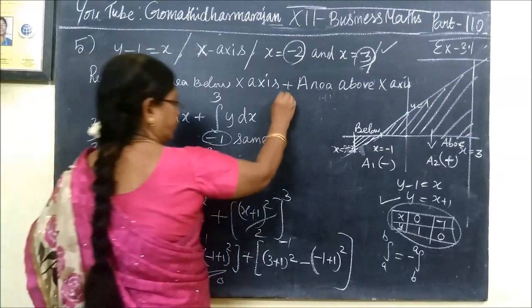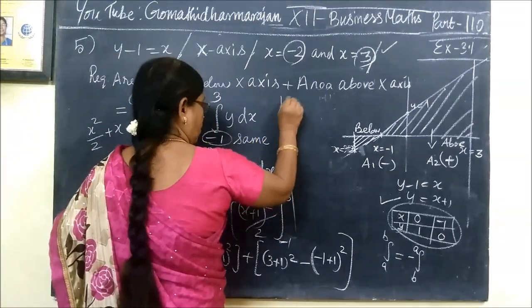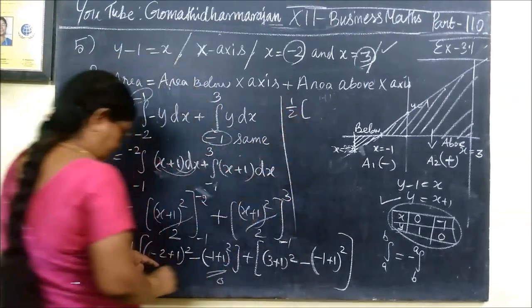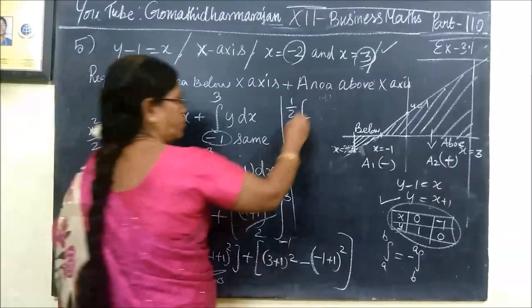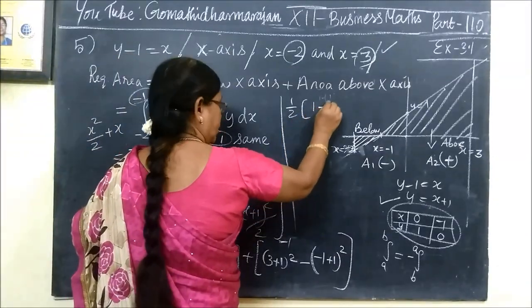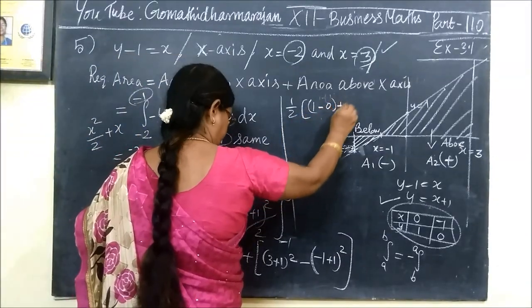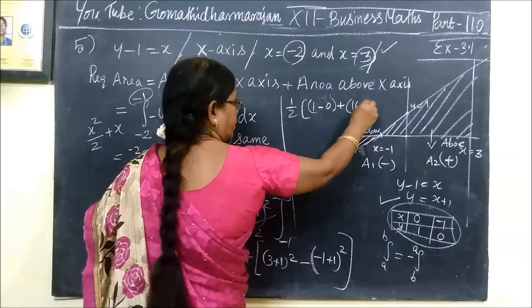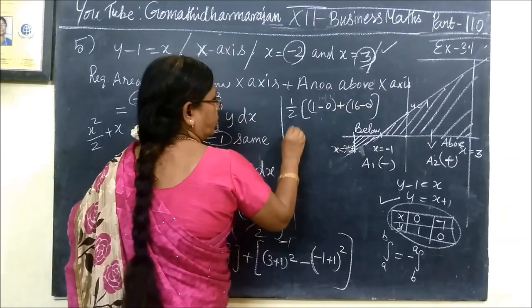This is complete. Zero cancels. So minus 2 plus 1 is minus 1 squared equals 1. Then zero. Then 4 squared equals 16. Then zero. So 1 plus 16.